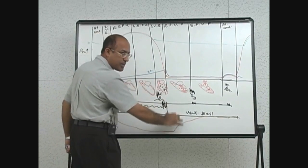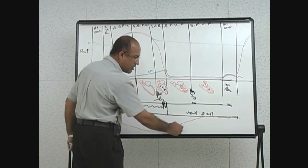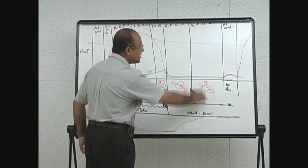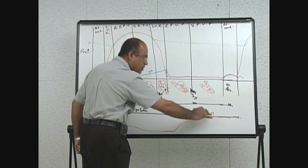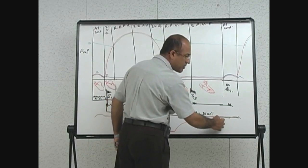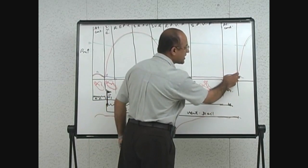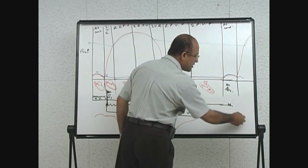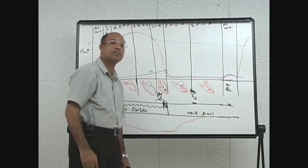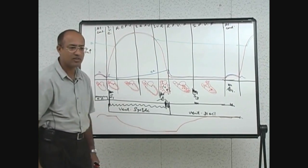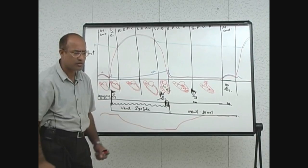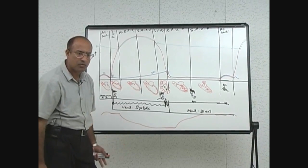In rapid passive filling, ventricular volume increases, then in slow passive filling volume increases again. Finally, when the next atrial contraction occurs, volume is added once more. Those are the volume changes throughout the cardiac cycle.